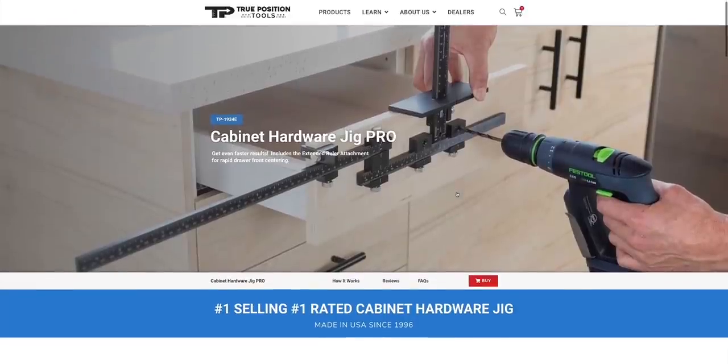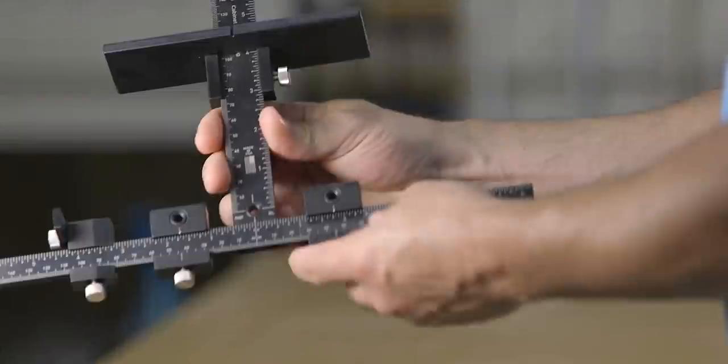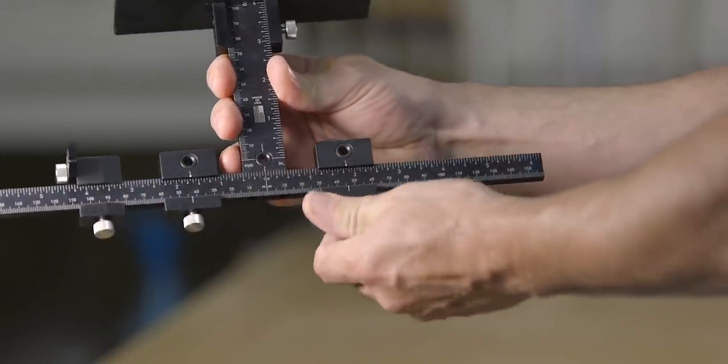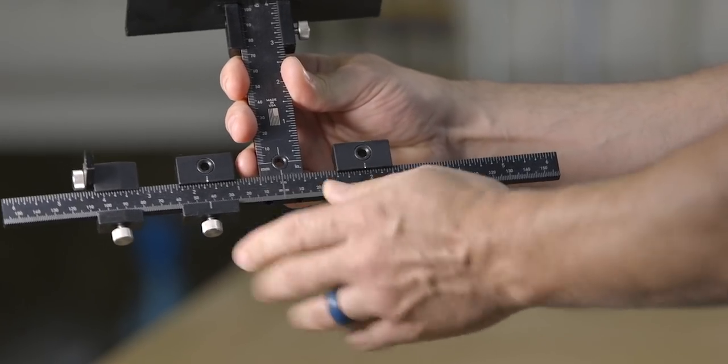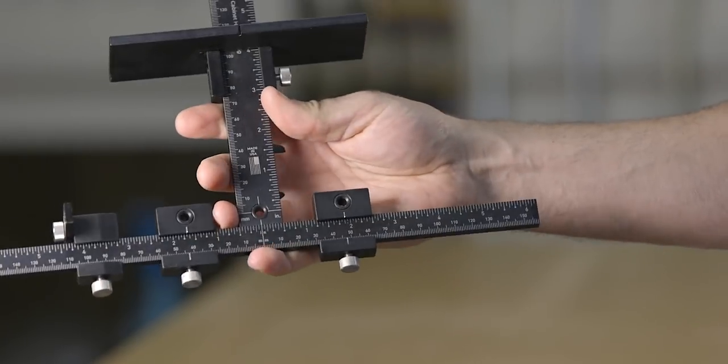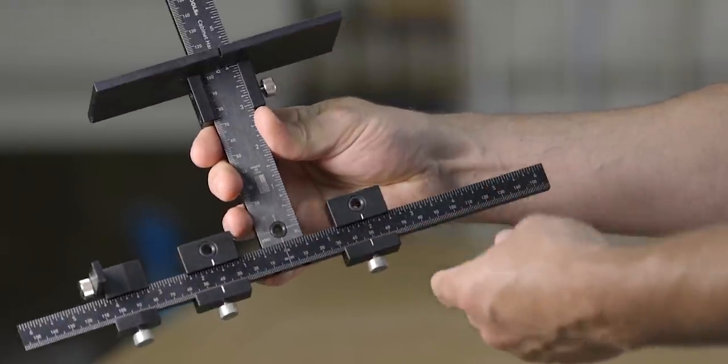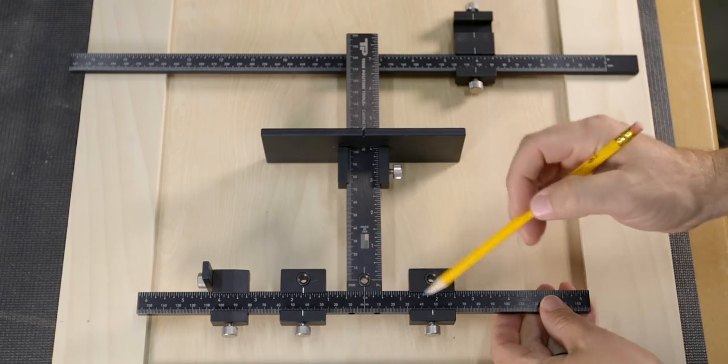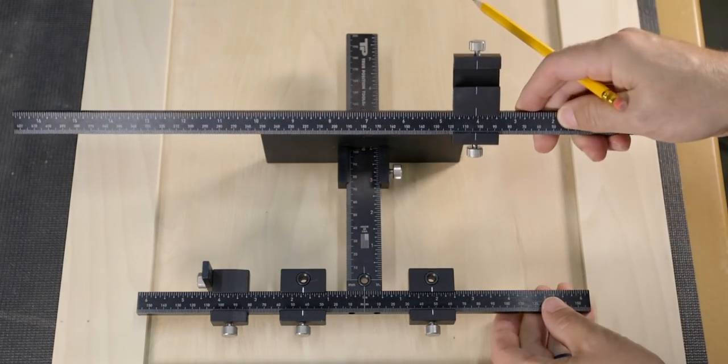The last company is called True Position Tools, and they make this wonderful cabinet hardware jig. At first glance, like the other tools, the machining and the quality of construction is outstanding. Every screw and attachment slides perfectly, making for a tool that is obviously made for precision. This jig's main purpose is to install knobs or handles on any cabinet door or drawer without having to measure a million times or make your own wooden jigs. The pro kit comes with a large stop, sliding drill guides, a sliding end stop, and an extended ruler.